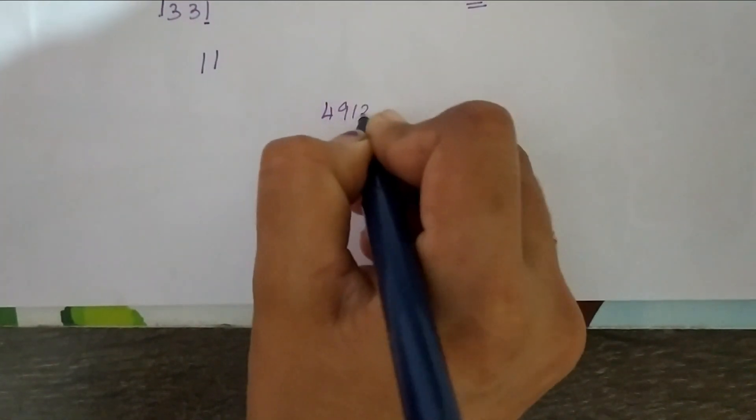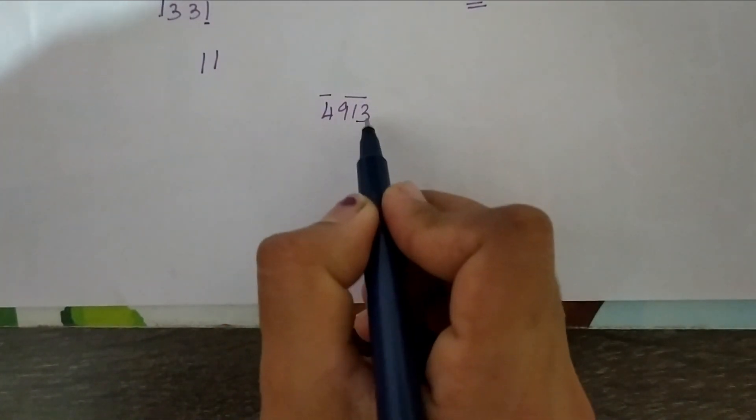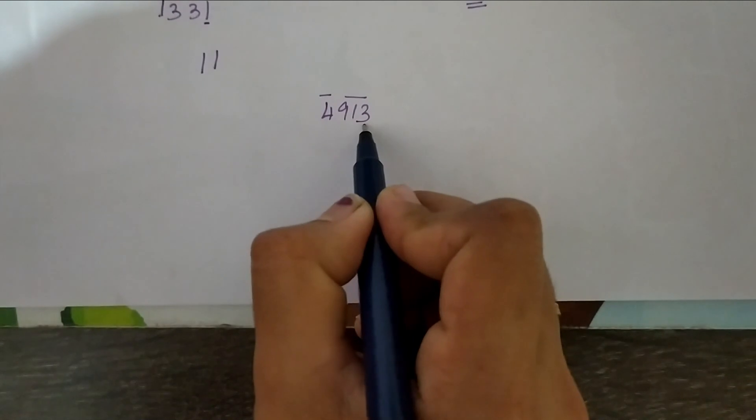Next number 4913. Group into three digits. First group. Check for the unit's place. It is 3.